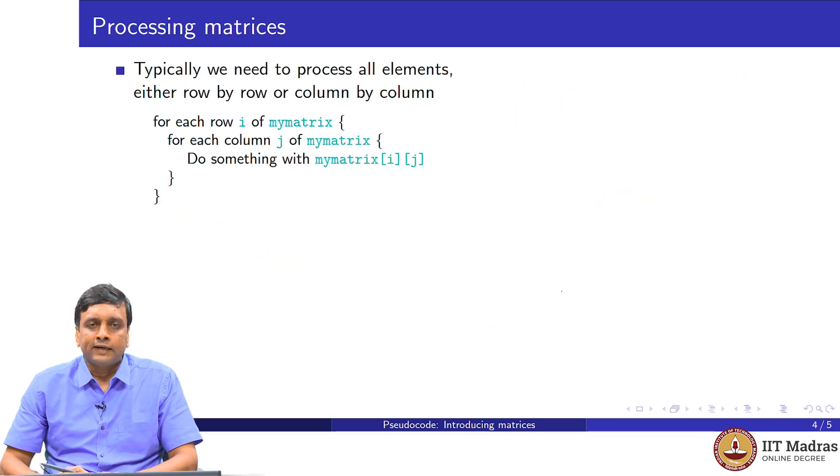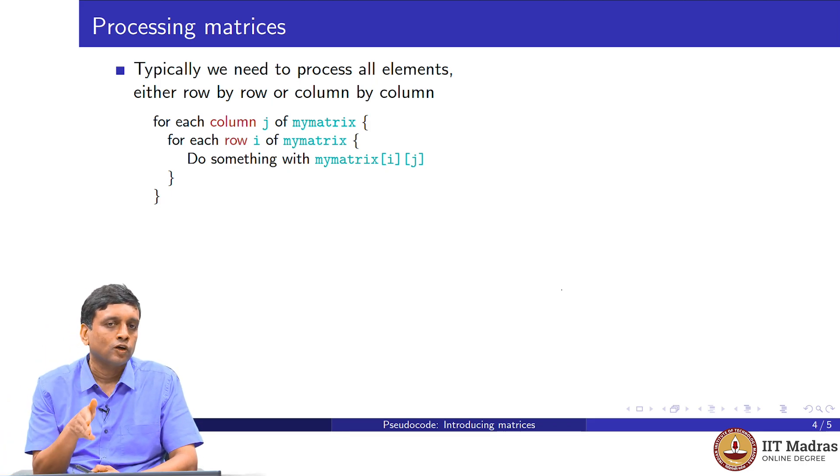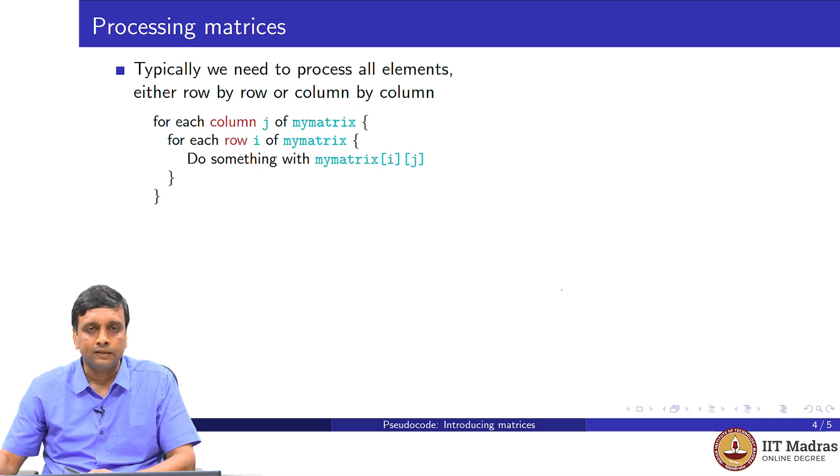The way we normally deal with matrices is to process them systematically either row by row or column by column. We might want to say for each row in my matrix and for each column in my matrix, do something with the element i comma j at row i and column j. We could also do it the other way around: for every column in my matrix and for every row in my matrix. Basically, instead of processing it row by row, processing it column by column. It depends on the application which one you want to do, but both of these are natural operations to perform on a matrix.